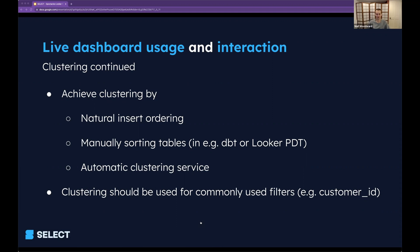You can't always rely on the natural insert order, which is what the next two options are about. The second option is manually sorting a table. Rather than relying on the natural insert order, we can just manually sort the table by a specific column. If we think of a DBT model or a Looker PDT, every time that table is replaced, if we just add an ORDER BY clause — say, ORDER BY created_at for the orders table, or if a dashboard commonly filters on customer_id, ORDER BY that column — the table is going to be clustered on that column and will be really effective to filter against.